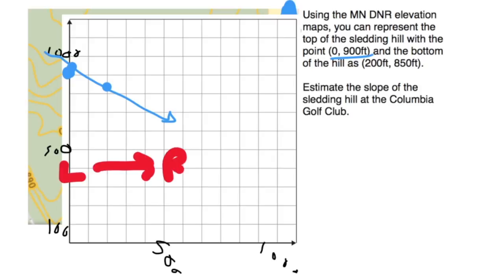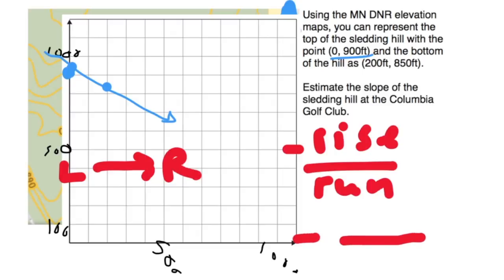Now that I have the line, it's easy to see that as I move from left to right, the hill is going down. And so the slope is going to be negative. The change in the rise is going to be the difference of the y value. So 900 minus 850 is 50 feet vertical change. The horizontal change is the difference between the x coordinates. So 200 minus 0 would have a horizontal run of 200. So I have negative 50 over 200, which can be simplified to a slope of negative one-fourth.